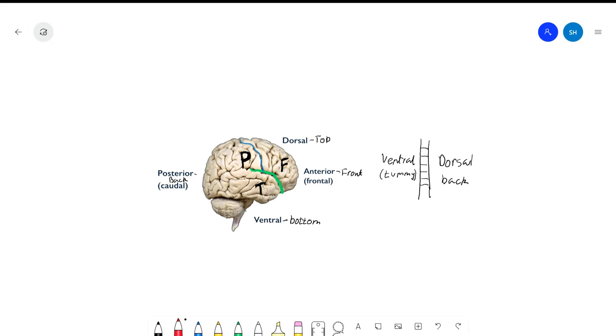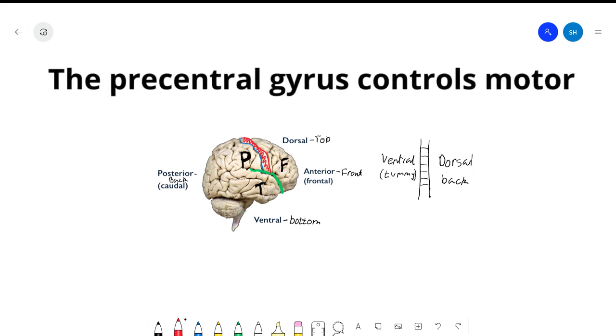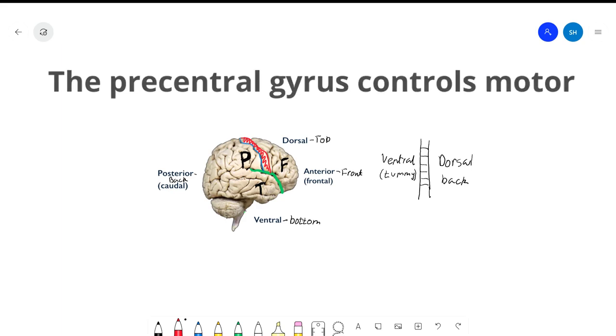The precentral gyrus is located in the frontal lobe. This is the precentral gyrus and it controls motor skills.